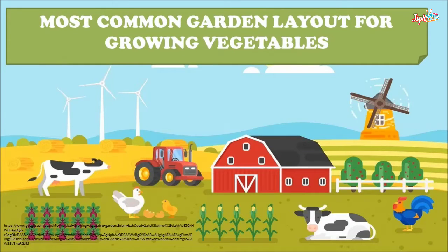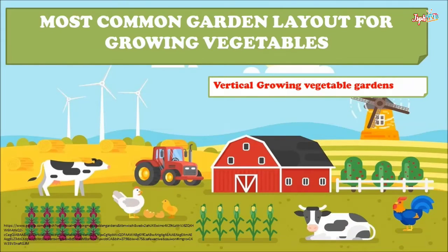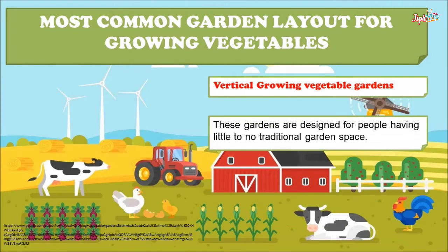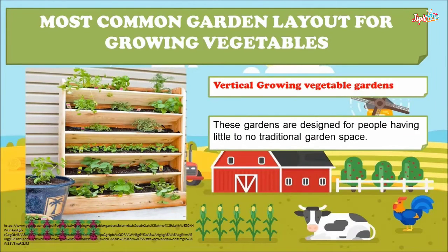For the most common garden layouts for growing vegetables, we have vertical growing vegetable gardens. These gardens are designed for people having little to no traditional garden space.